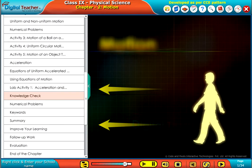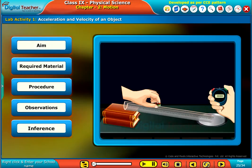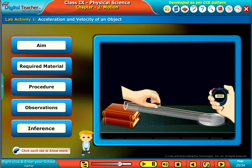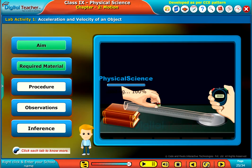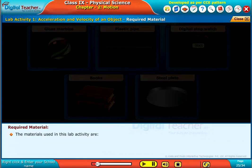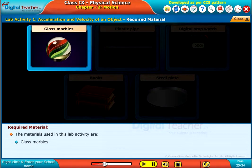Welcome to the chapter motion. Let us do a lab activity to find the acceleration and velocity of an object moving on an inclined track. Click each tab to know more. The aim of this activity is to find the acceleration and velocity of an object moving on an inclined track.